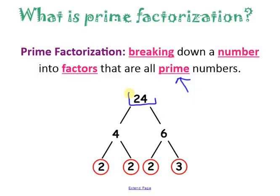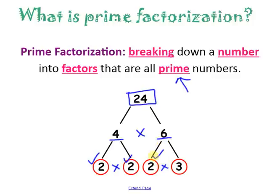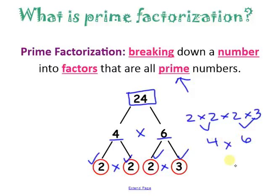Here I have the number 24. At first, 4 times 6 equals 24, but 4 and 6 are not prime numbers. So I take 4 and break it down further: 2 times 2 is 4, and both 2s are prime. Then I take 6 and break it down: 2 times 3 is 6, and both are prime. So the prime factorization of 24 is 2 times 2 times 2 times 3. Multiplying back: 2 times 2 is 4, 2 times 3 is 6, and 4 times 6 is 24. It's the upside-down version of the tree.